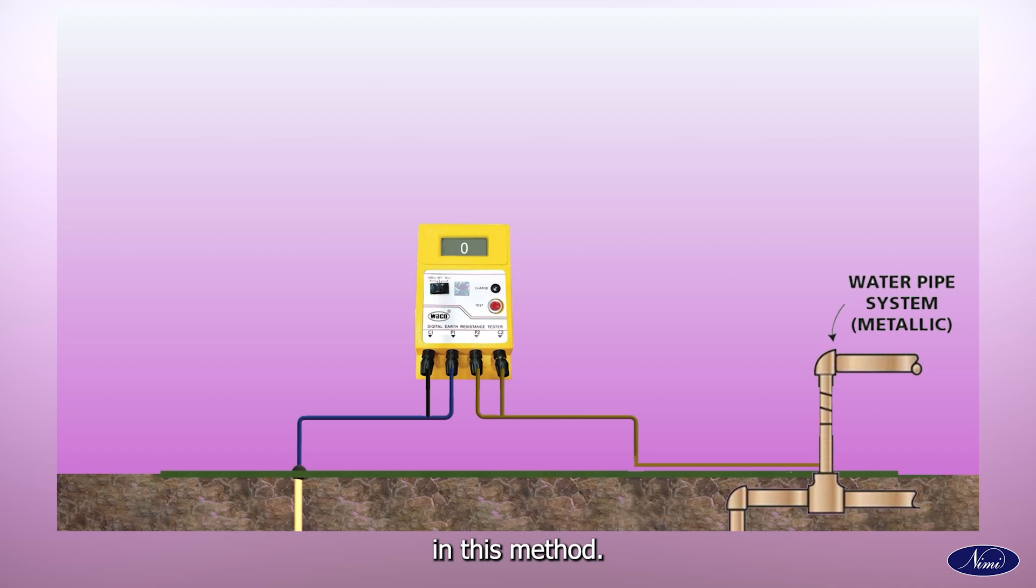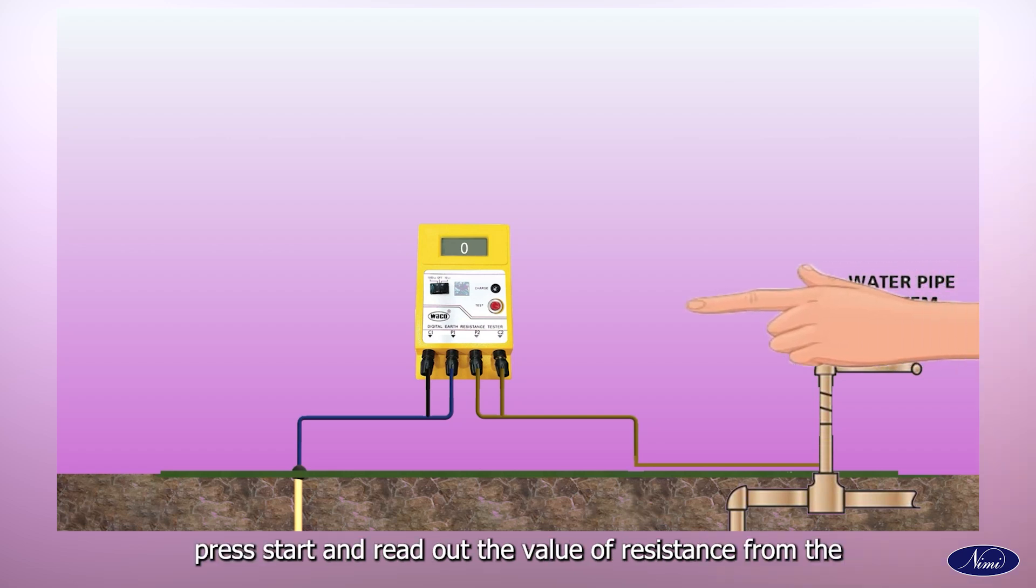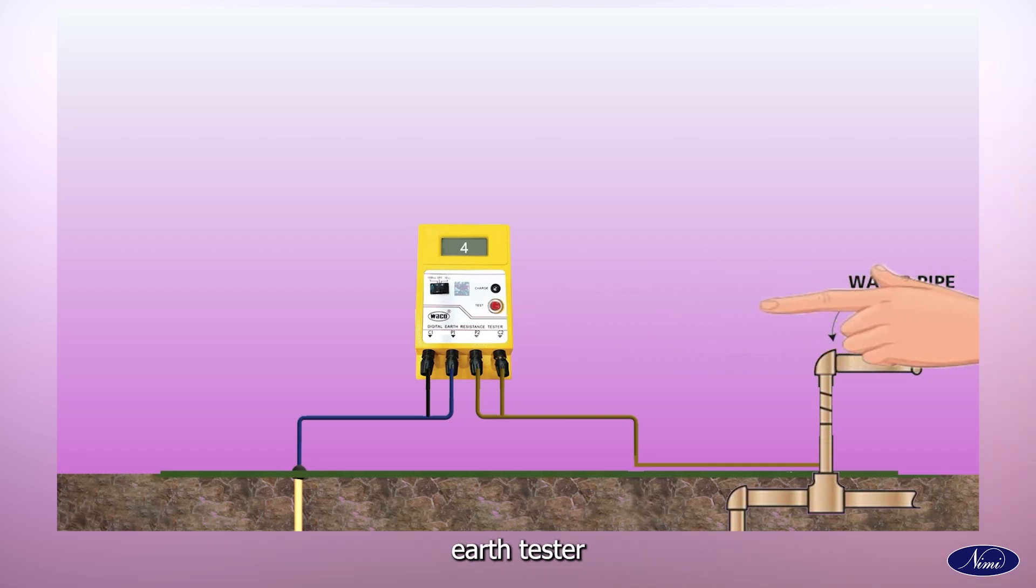In this method, the P1 and C1 terminals together are connected to the earth electrode tester, while P2 and C2 terminals together are connected to a different metallic grounded point, like a water pipe or building steel. Press start and read out the resistance value from the earth tester.